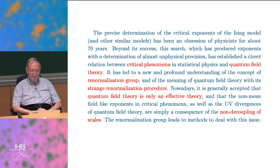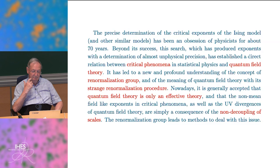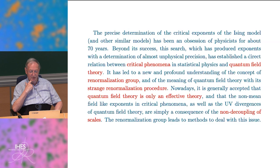The precise determination of critical exponents of the Ising model and also a family of other models has been an obsession of physicists for about 70 years. Beyond its success, research which has produced exponents with a determination of almost unphysical precision has established a direct relation between critical phenomena in statistical physics and quantum field theory. It has led to a new and profound understanding of the concept of the renormalization group and the meaning of quantum field theory, which has a strange renormalization procedure.